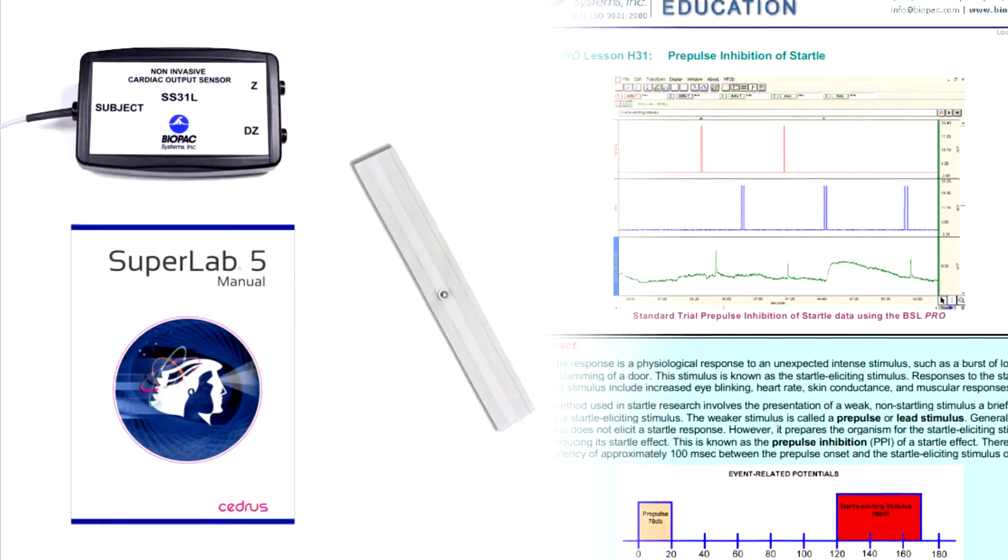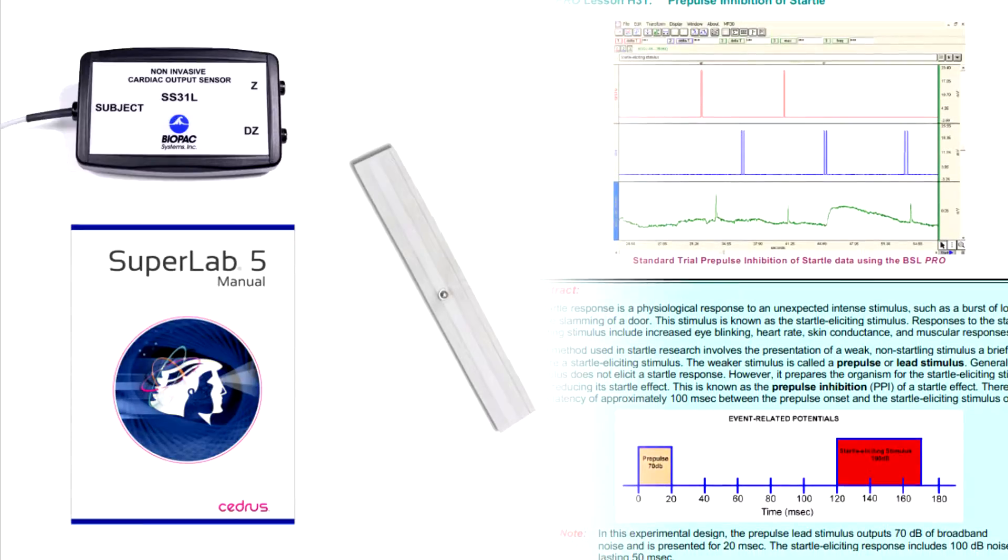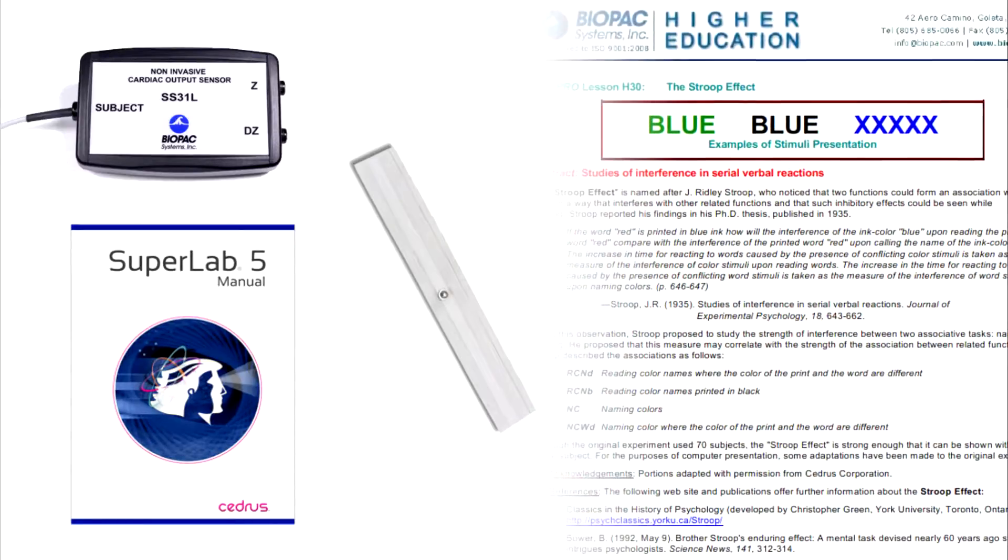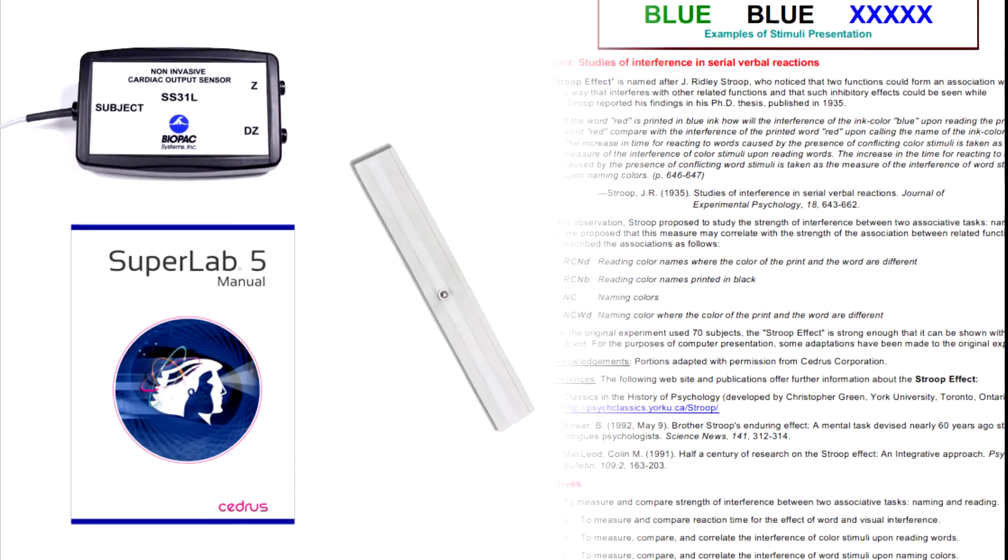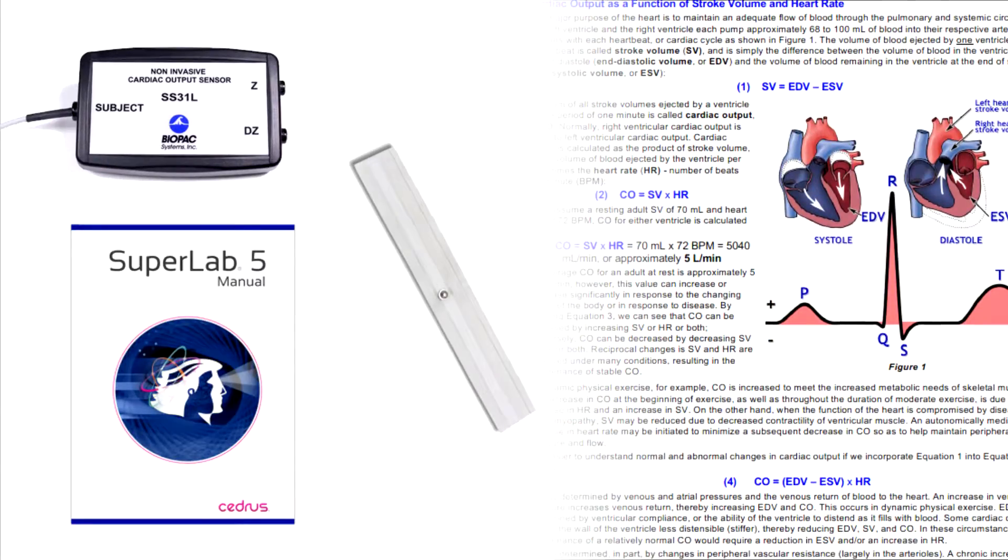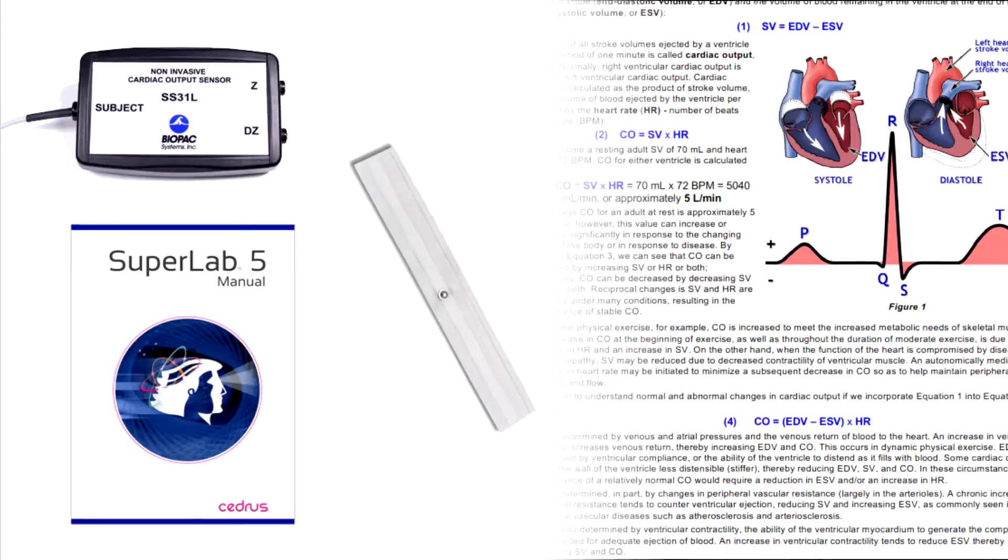The optional transducer accessory pack can be added to expand your system with hardware and lessons. This TA pack includes cardiac output sensor with bioimpedance strip electrodes and super lab system with optically isolated interface.